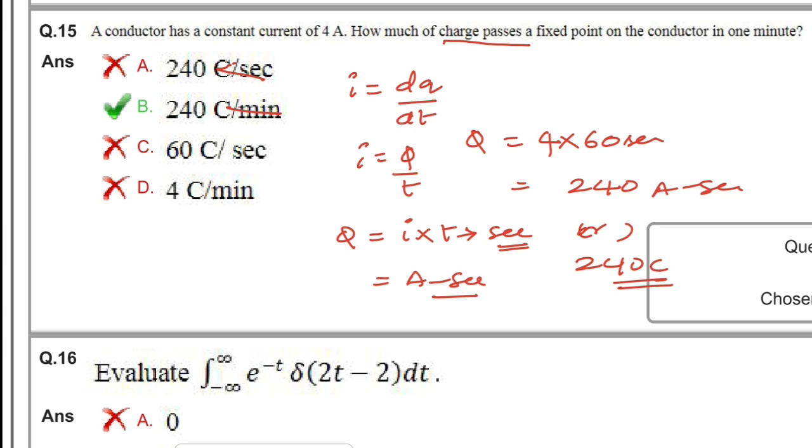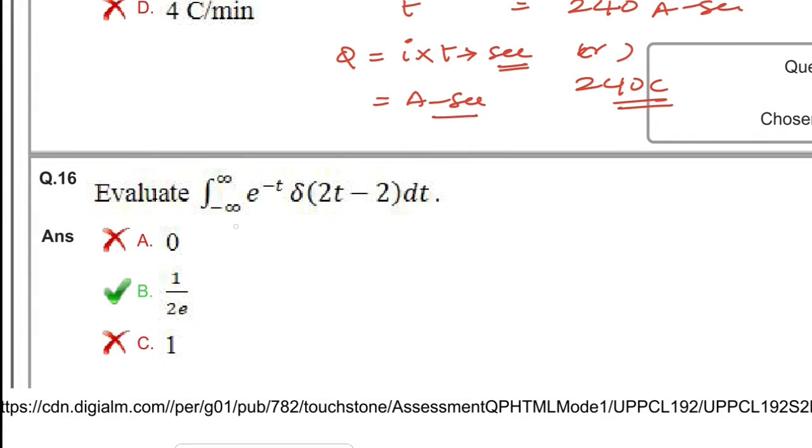Next question: evaluate the integral from minus infinity to plus infinity of e^(-t) × δ(2t - 2) dt. If you solve this mathematical problem, you will get the answer 1/(2e).